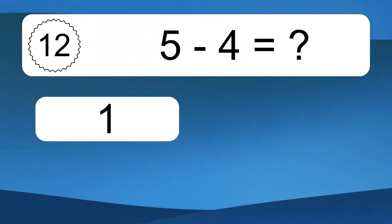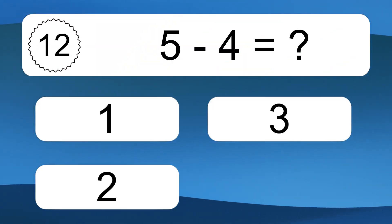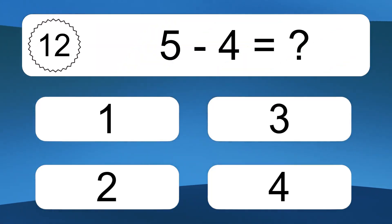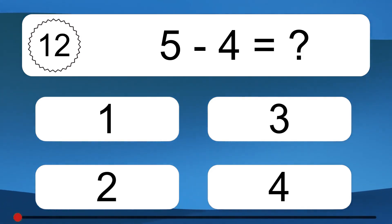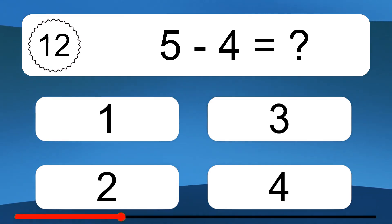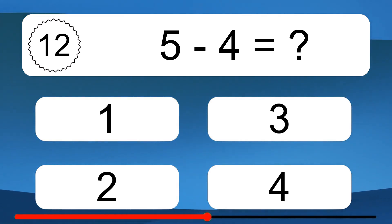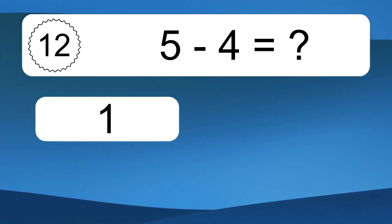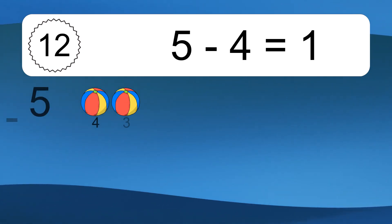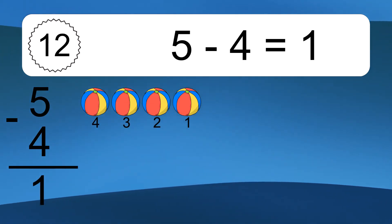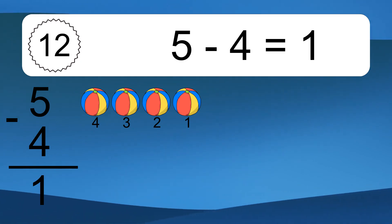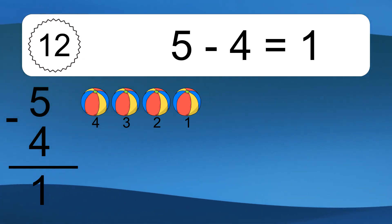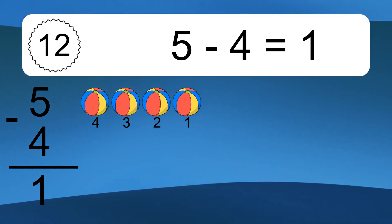5 minus 4 equals what? 5 minus 4 equals 1. Let's count it: 4, 3, 2, 1.